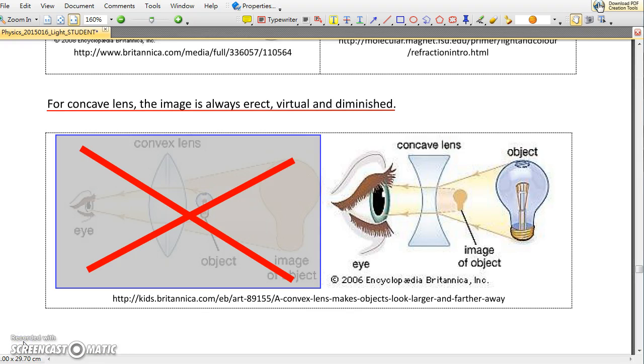And lastly, for concave lens, it can only form erect, virtual, and diminished image as shown here.